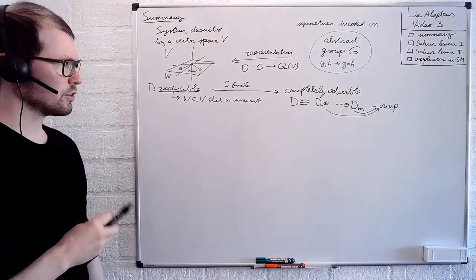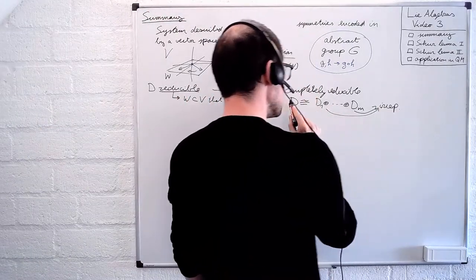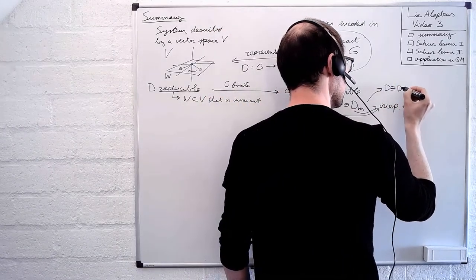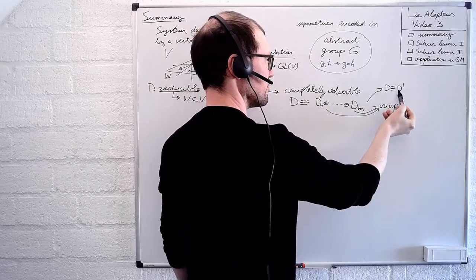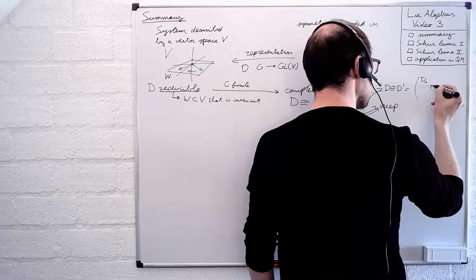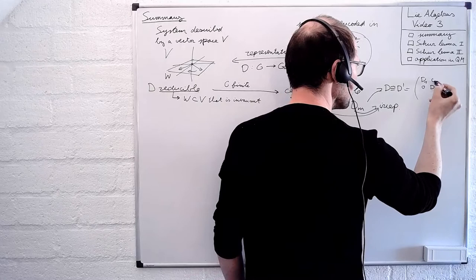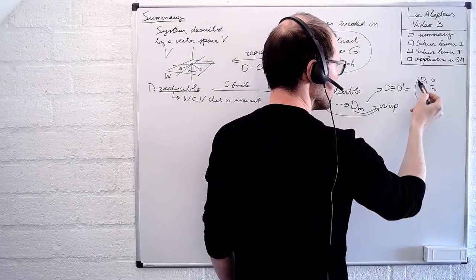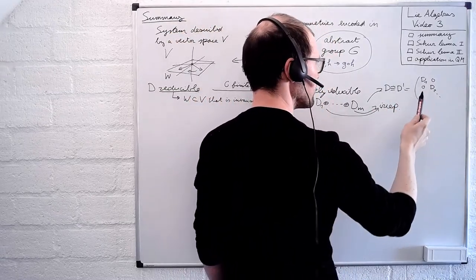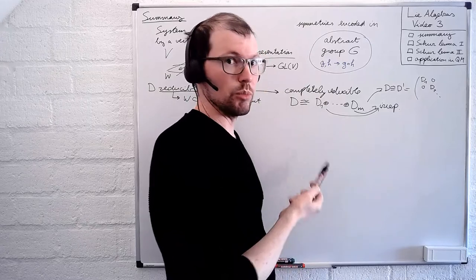We proved that if G is actually a finite group, then the representation is completely reducible. This means D is equivalent — up to a change of basis of V — to the direct sum of certain irreducible representations, often abbreviated as irreps. In terms of matrices, D is equivalent up to a similarity transform to a block diagonal representation D′, where the blocks correspond to the irreducible components and the off-diagonal entries are zero. The dimension of each block is the dimension of the corresponding irreducible component.